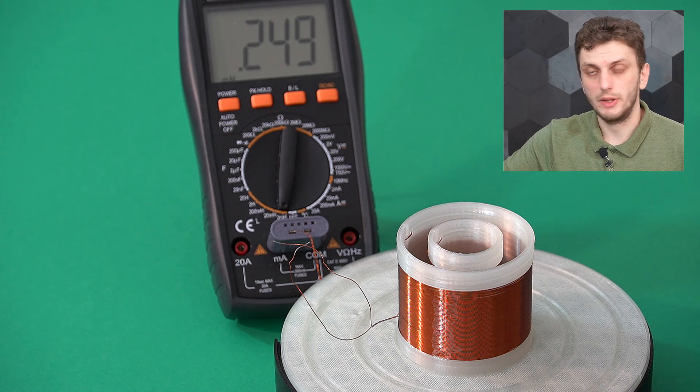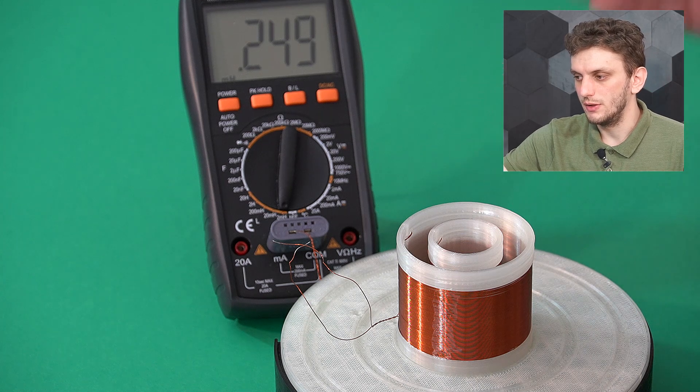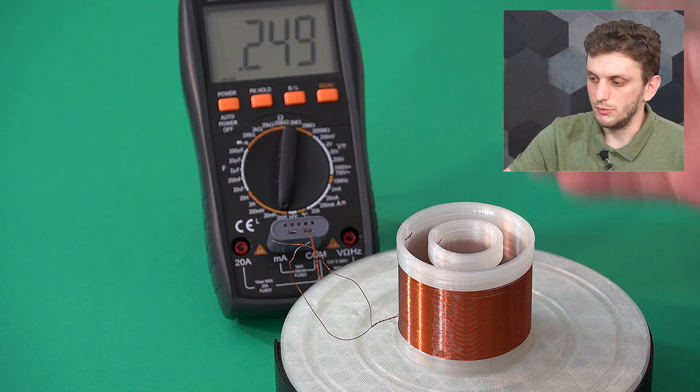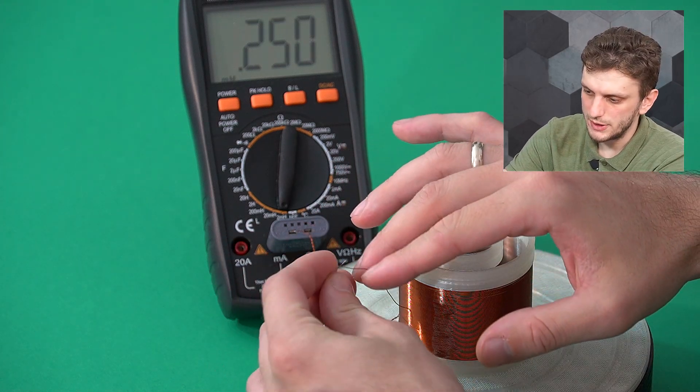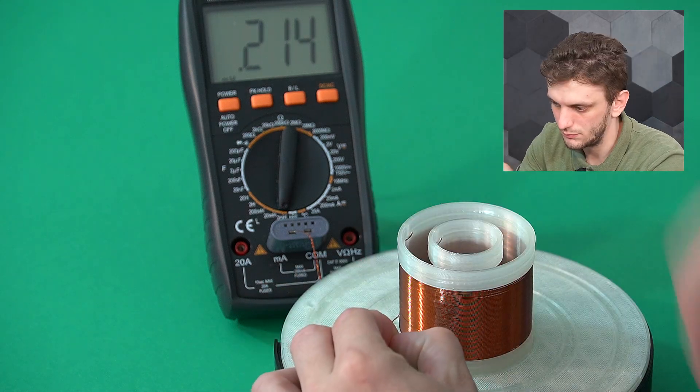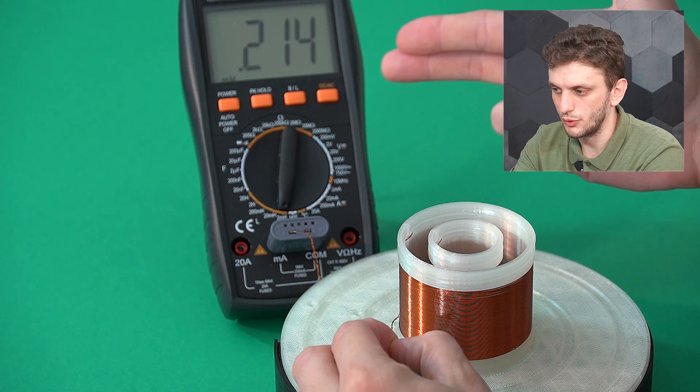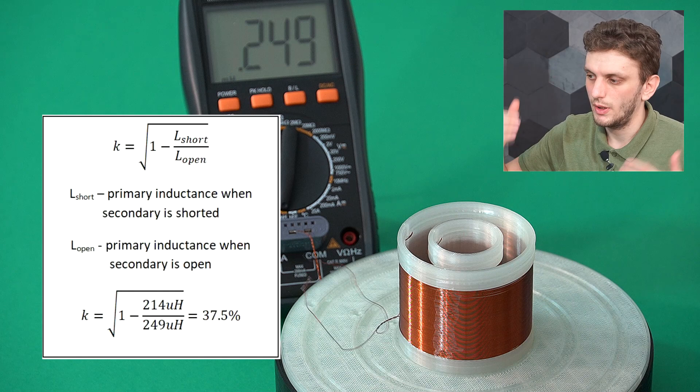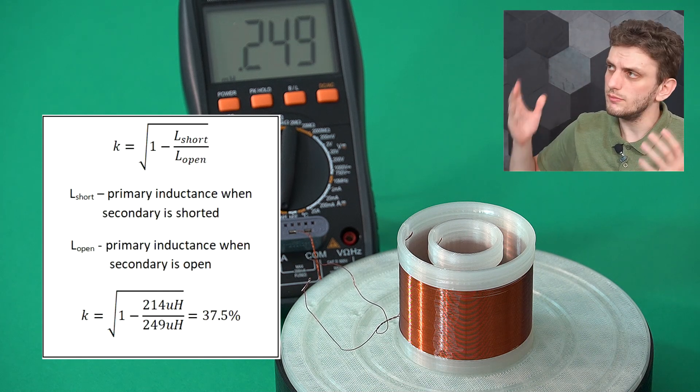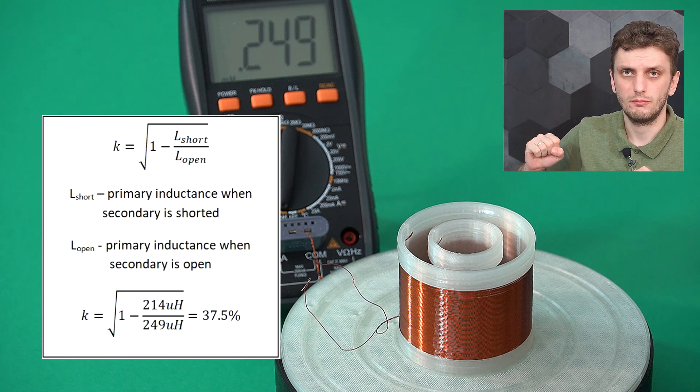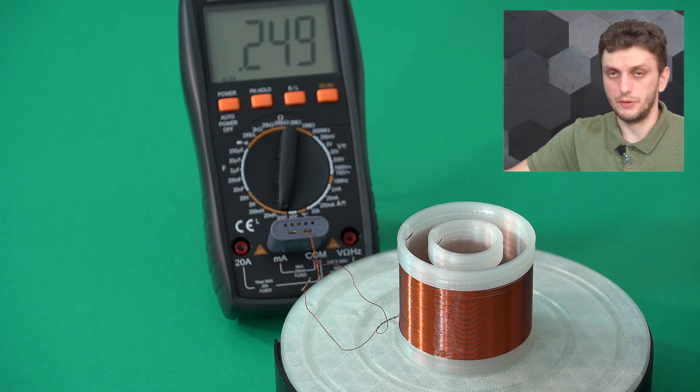And we can measure the coupling factor by measuring the variation of the inductance of one of the inductors when the other inductor is on the one side an open circuit and on the other side in a short circuit. So right now, I have my inner inductor connected to my inductance meter, showing about 250 microhenry. And at the moment, the outer inductor is in an open circuit. But now, if we put this into a short circuit, we can see our inductance drops to 214 microhenry. And from this, we can work out that our coupling factor is about 30%.